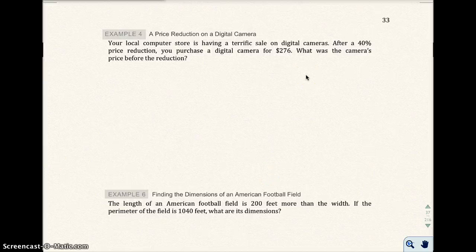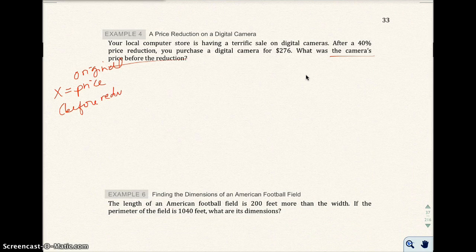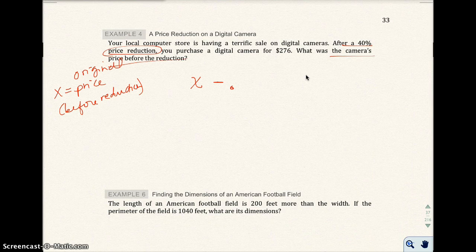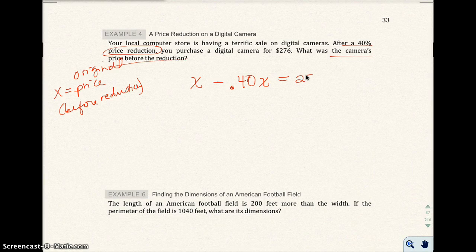The next example I get a lot of students getting questions on. Here it's saying a computer store is having a sale on cameras. After a 40% price reduction, the camera only costs $276. What was the camera price before the reduction? We're trying to figure out the original price before reduction. We know we have an original price x. We know we have 40% reduction, so we're going to take off 40%, which is 0.40. Whenever we get a percentage off, it's percentage off the original price. So 40% of the original price, which is x. And we end up paying only $276. So the original price minus 40% of the original price, that's hard for a lot of students to set up.